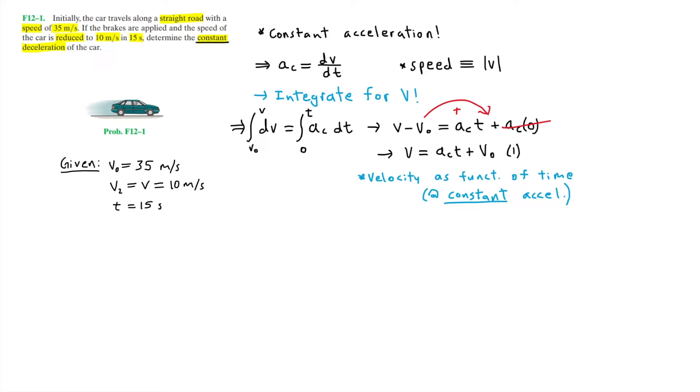However, it's still really helpful to understand how these variables are related through integration and differentiation. So now back to the problem, we can now simply substitute in the known values into our equation, since we have V0 of 35 meters per second, which is our initial velocity.